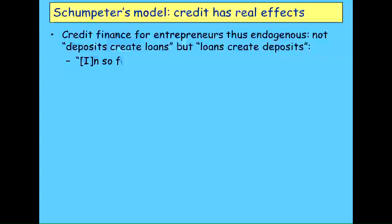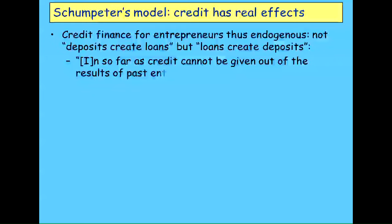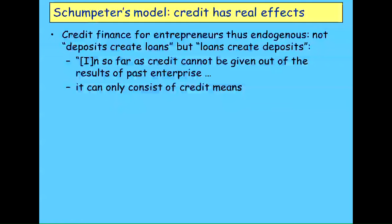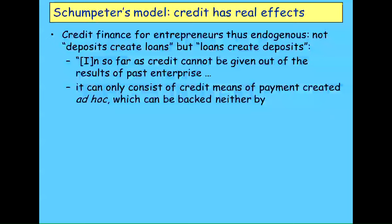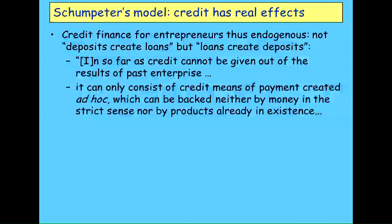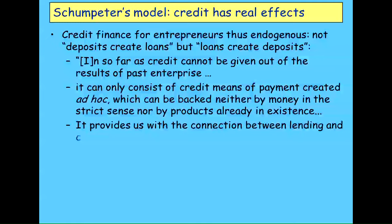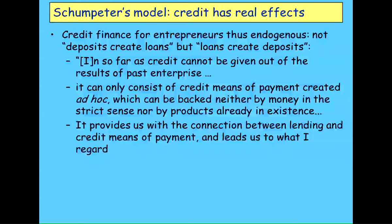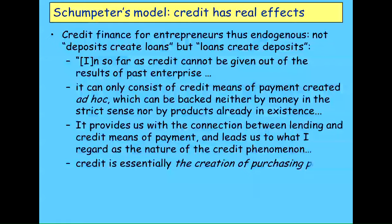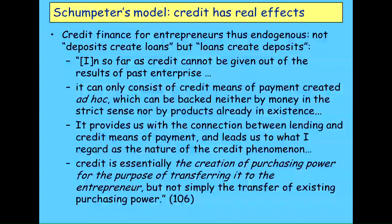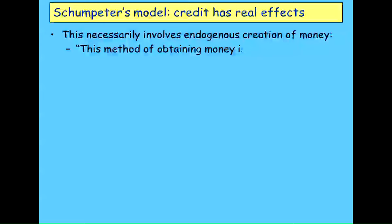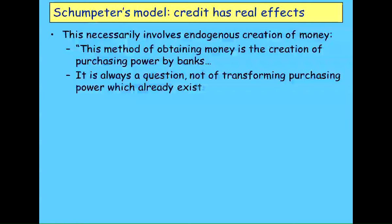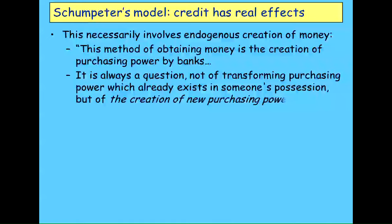Schumpeter said credit can only consist of credit means of payment created ad hoc — backed by neither money (meaning gold) nor by products already in existence. Here's a classic statement of endogenous money: 'Credit is essentially the creation of purchasing power for the purpose of transferring it to the entrepreneur — but not simply transferring existing purchasing power, but creating it out of nothing.' This method of obtaining money is the creation of purchasing power by the banks — not transferring existing funds from a saver to a borrower, which is the standard neoclassical way of thinking, but the creation of new purchasing power out of nothing.